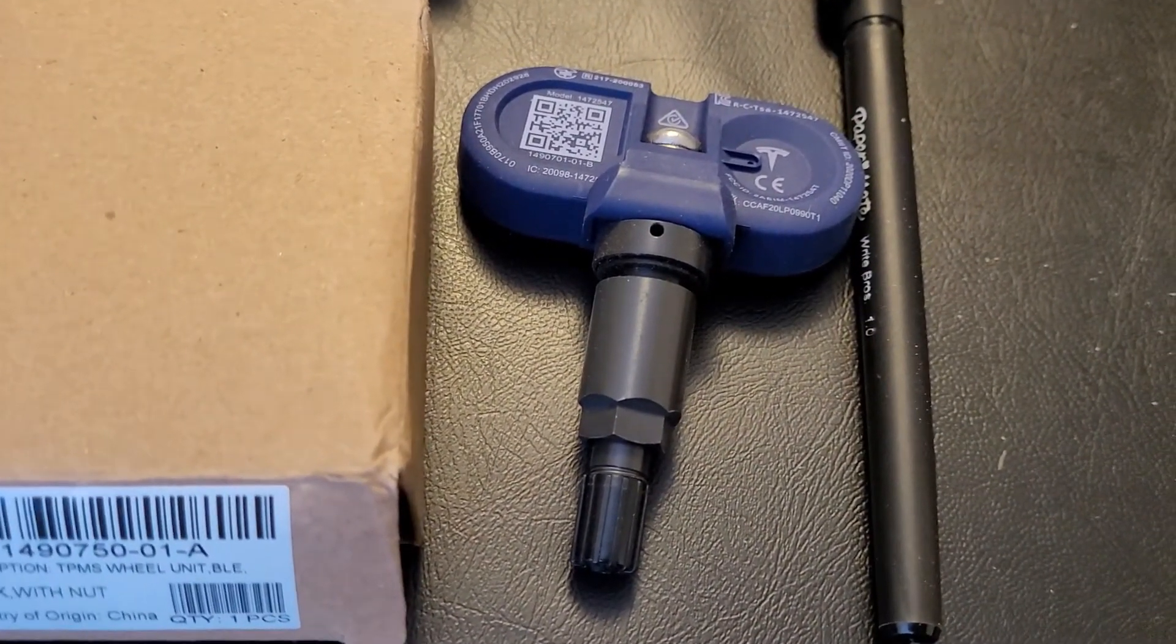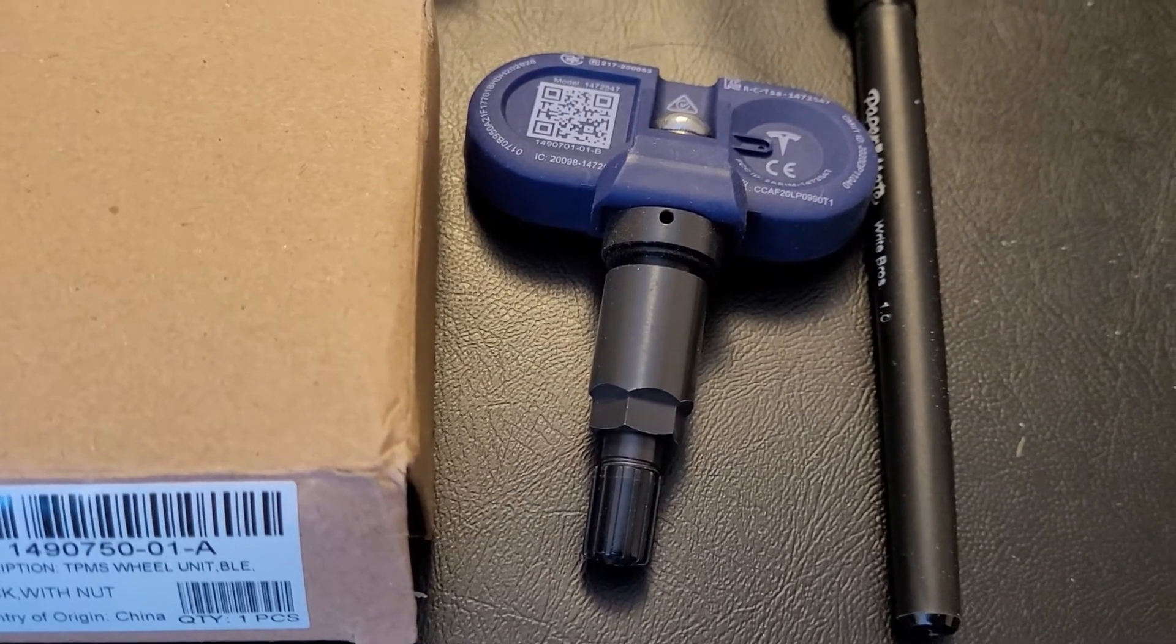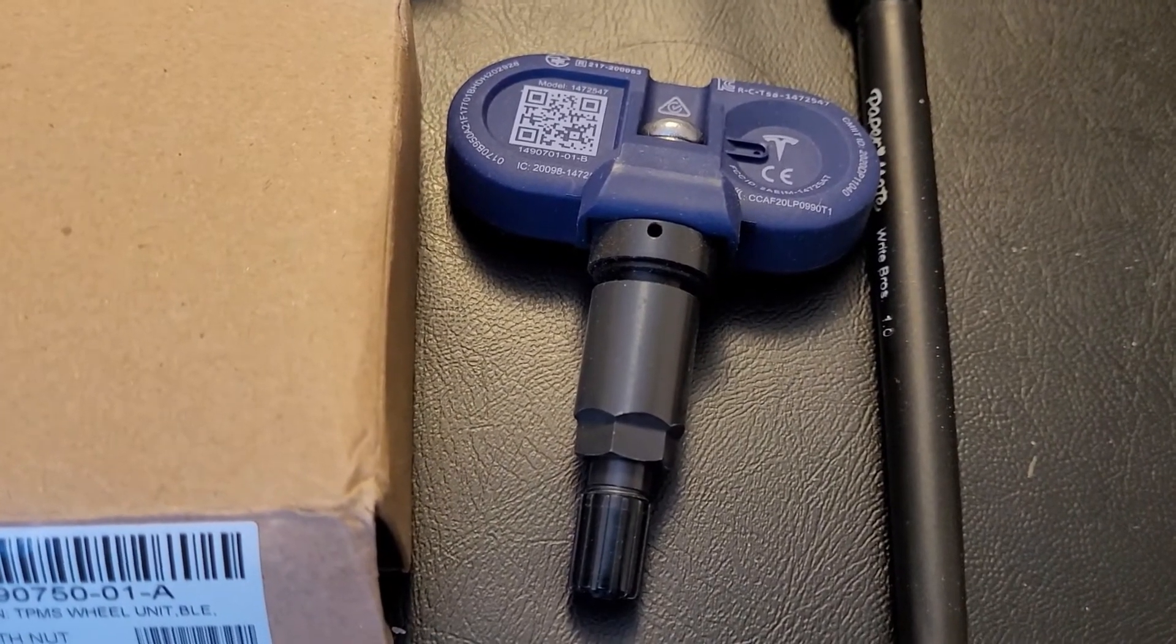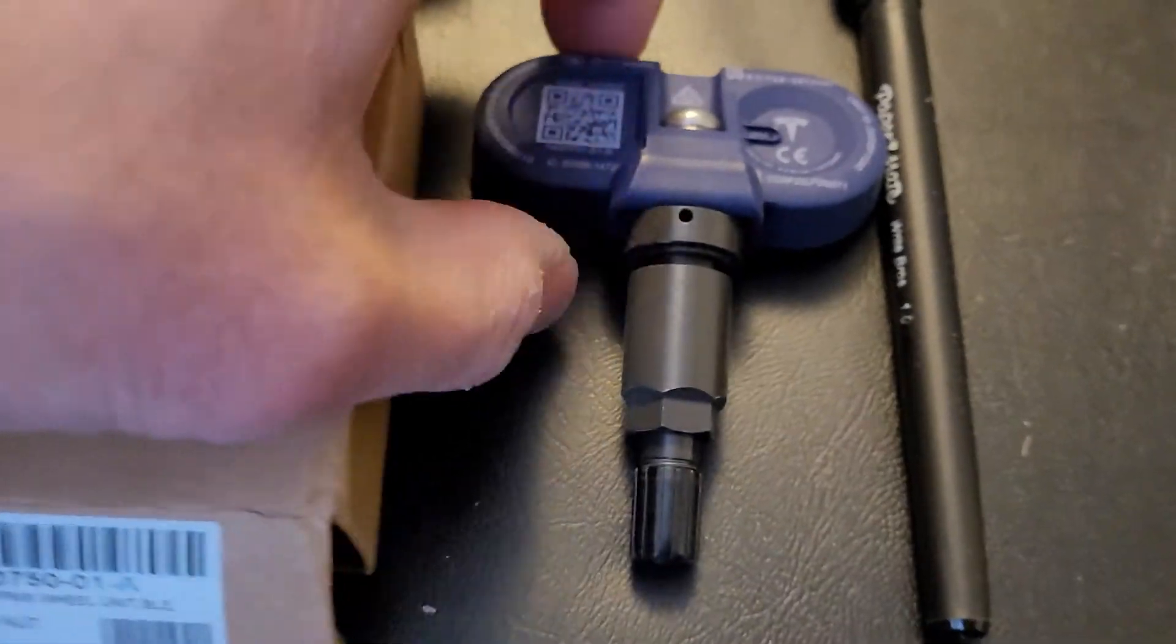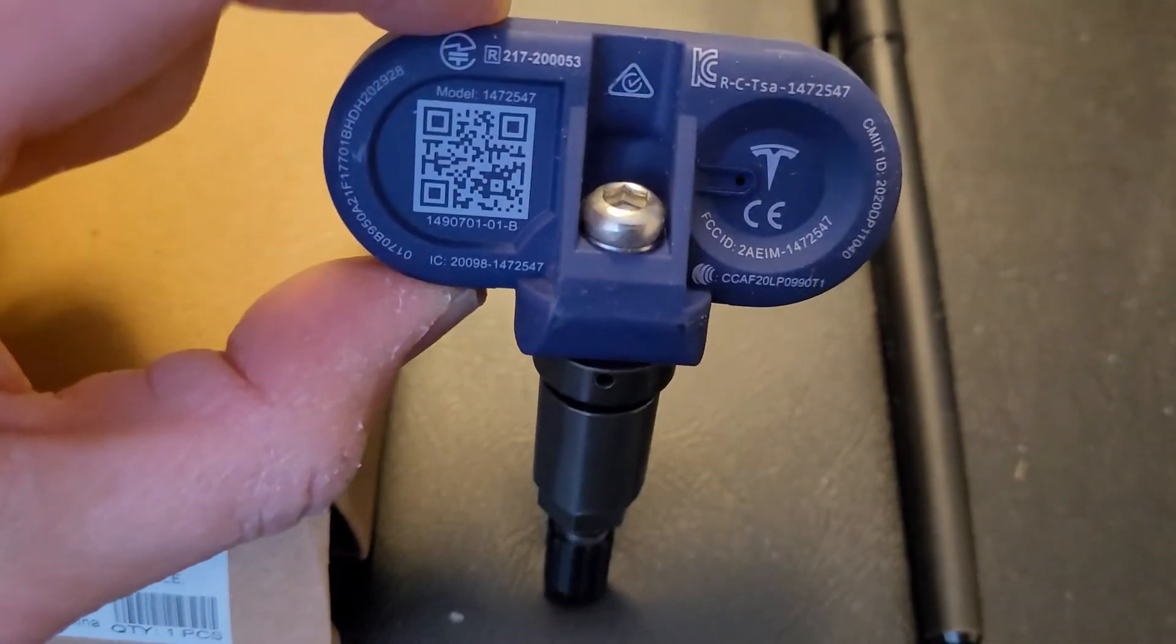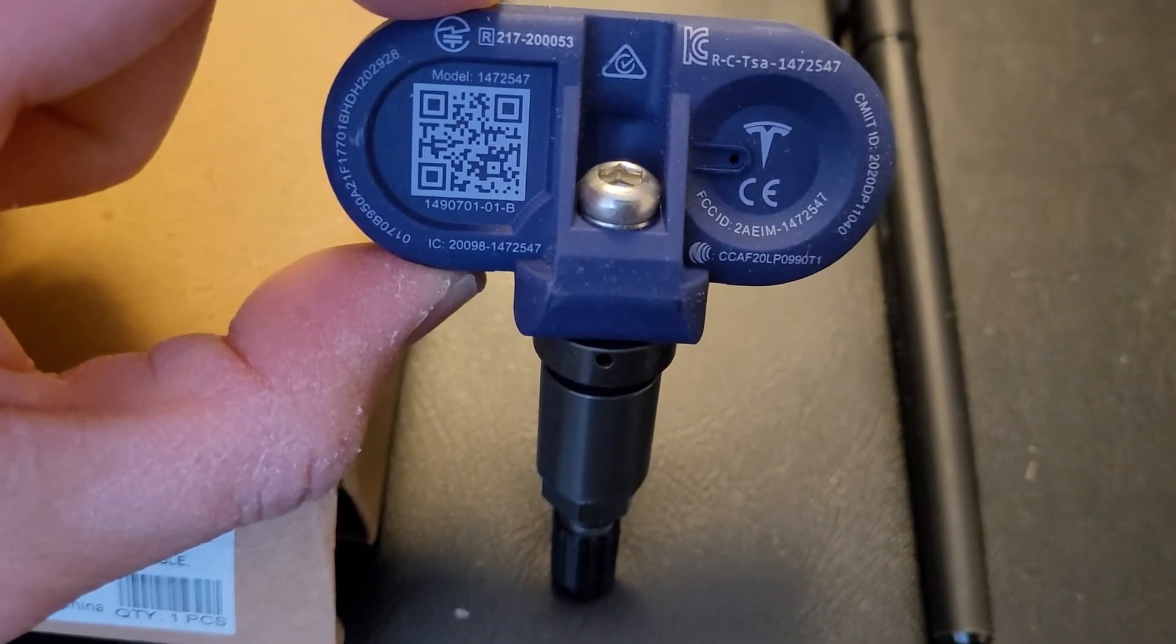So there you go. Here's a short look at the TPMS that I purchased from Tesla Canada. It's $95 Canadian each. Free shipping directly from California. Thank you.